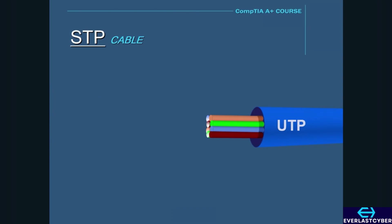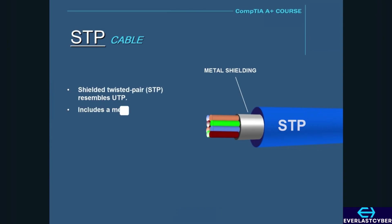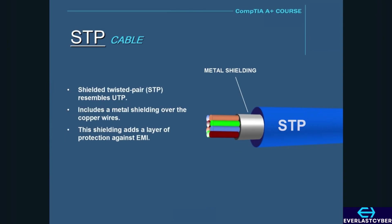Shielded twisted pair is very similar to unshielded twisted pair, except that it has a foil shield that covers the wires. This shielding adds a layer of protection against electromagnetic interference leaking into or out of a cable.